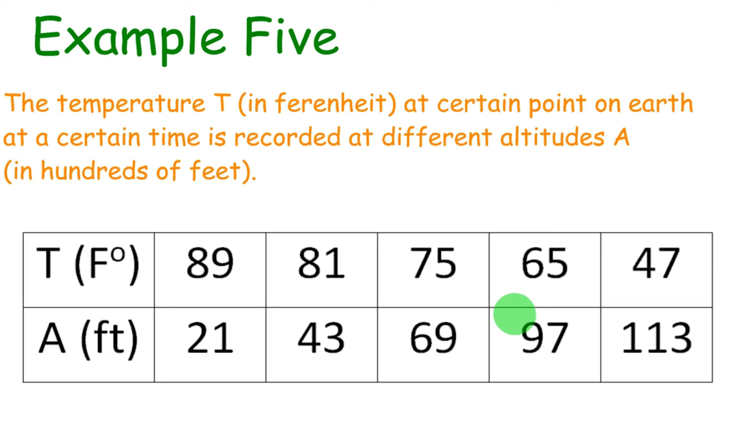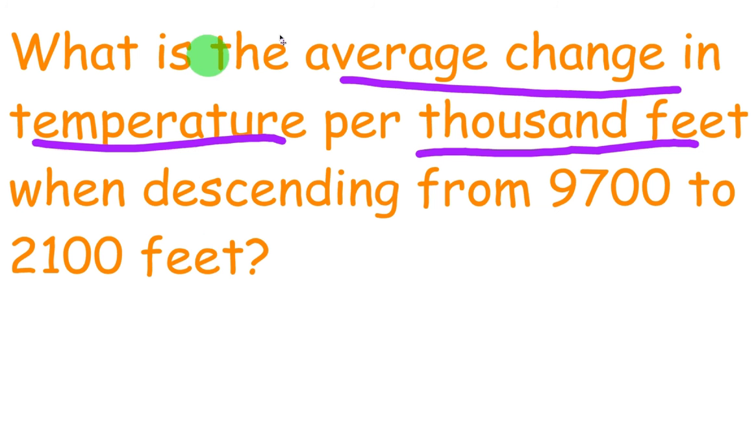So let's see what this question is asking. It says, what is the average change in temperature? So we know that's an average rate of change, per 1,000 feet. So again, this is like the change in Y over change in X. When descending from 9,700 to 2,100 feet.